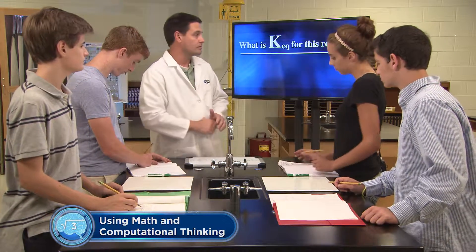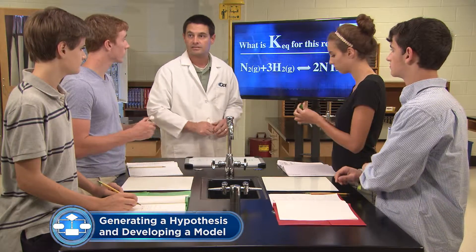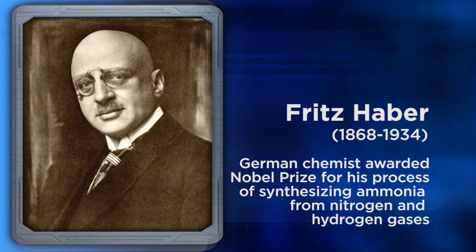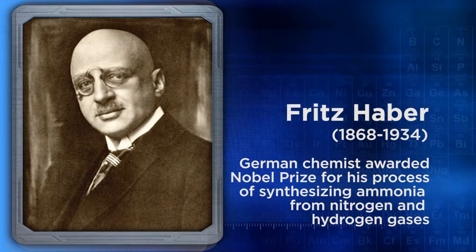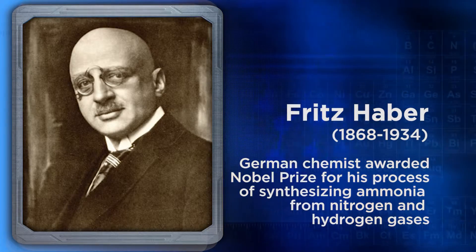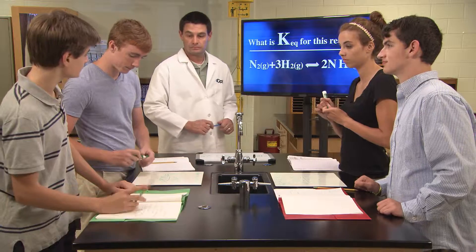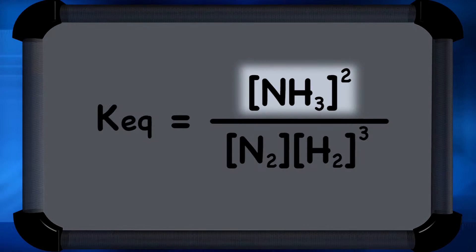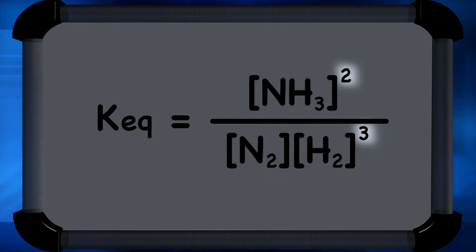Now let's work with your partner to determine the equilibrium expression for the next reaction. This reaction of hydrogen plus nitrogen reaching equilibrium with ammonia is known as the Haber process. The Haber process is a very important industrial chemical reaction, responsible for producing almost 500 million tons of ammonia each year. Fritz Haber, who formulated this reaction, was awarded the Nobel Prize for it. We've got the finished reaction right here. Austin, would you like to share what you got? We put the product NH3, or ammonia, on top, and then nitrogen and hydrogen on the bottom because they're reactants, and we gave them exponents that match the coefficients in the chemical equation. Perfect.